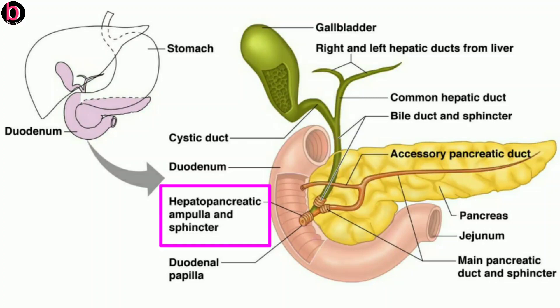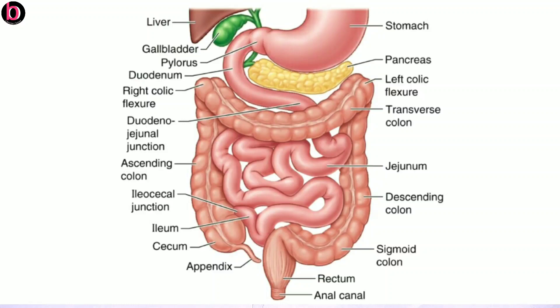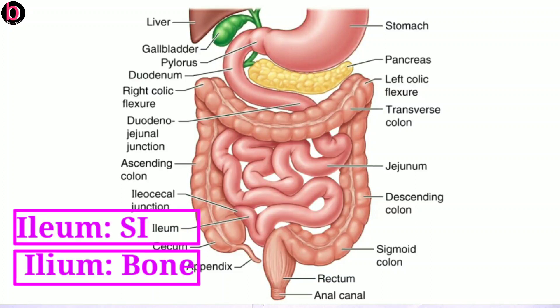The ampulla of Vater opens into the duodenal region of the small intestine. The second part is jejunum, nearly two and a half meters long, while the third part is ileum, the longest part at nearly three and a half meters. Note the spelling distinction: 'ileum' refers to the last part of the small intestine, while 'ilium' is one of the bones of the pelvic girdle — part of the coxal bone, which is formed by the ilium, ischium, and pubis.